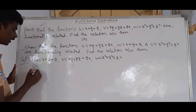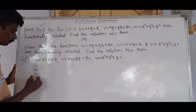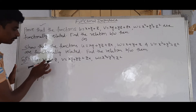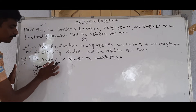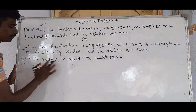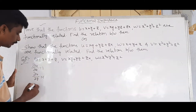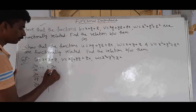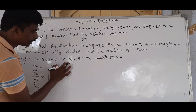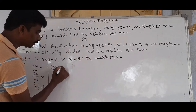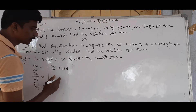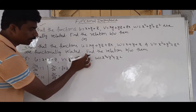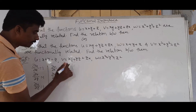Now computing partial derivatives. ∂u/∂x = 1, ∂u/∂y = 1, ∂u/∂z = 1. For v = xy + yz + zx: ∂v/∂x — differentiating with respect to x, yz is a separate term giving 0, and zx gives z — so ∂v/∂x = y + z. Then ∂v/∂y = x + z.